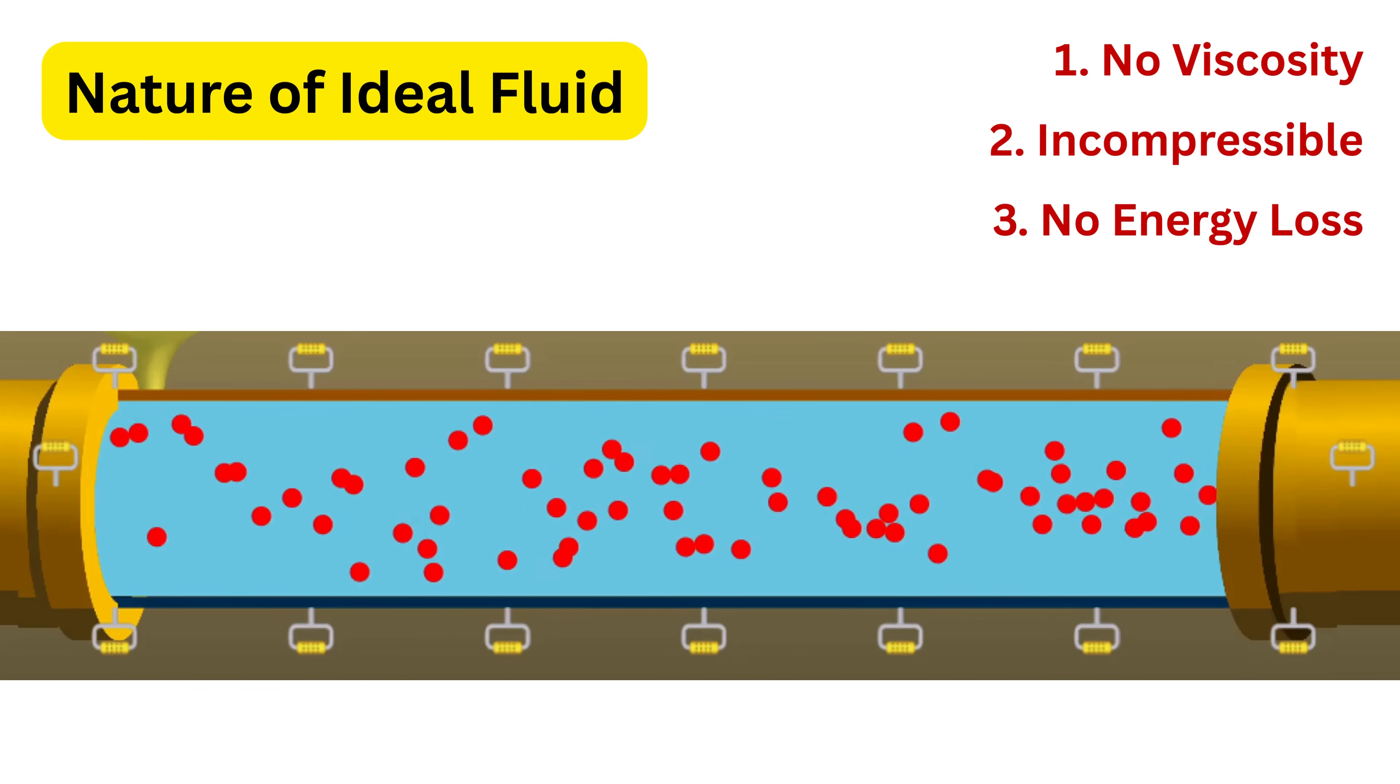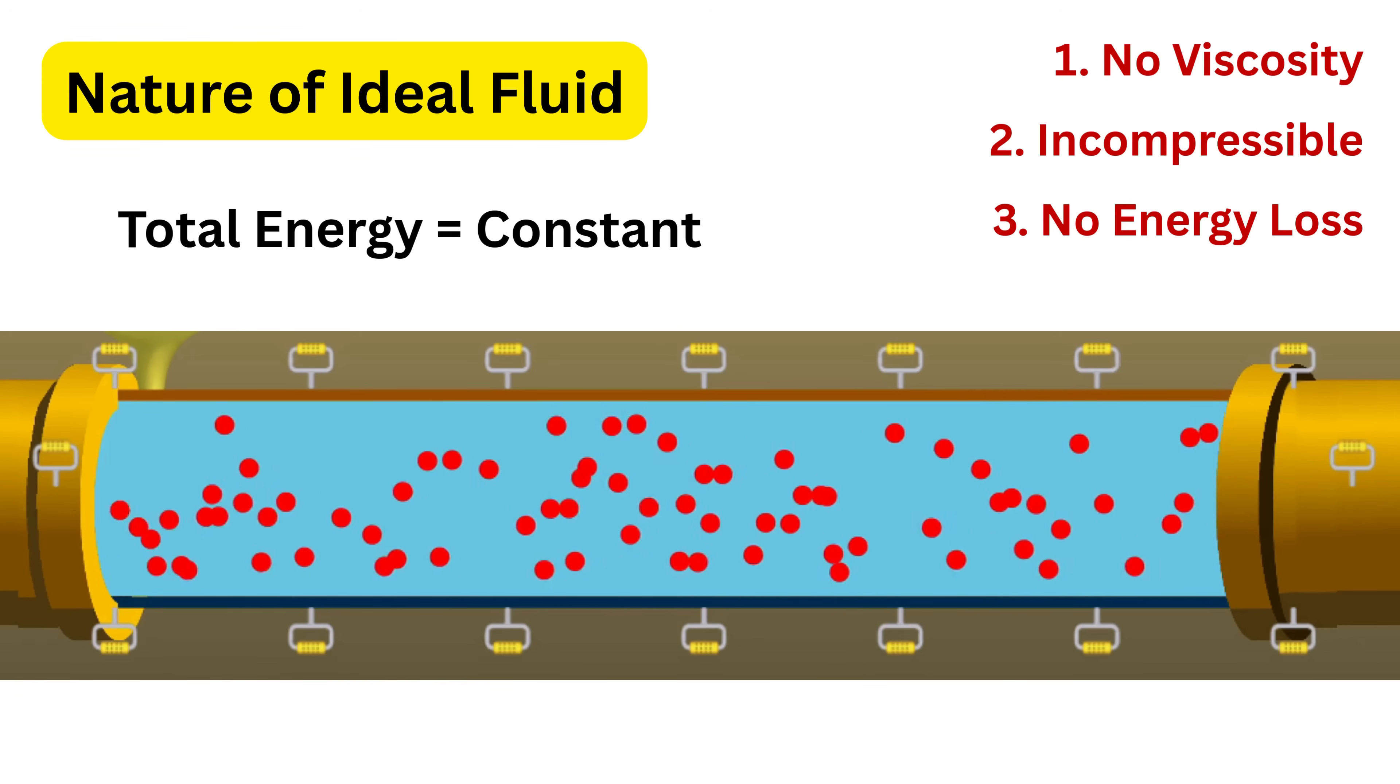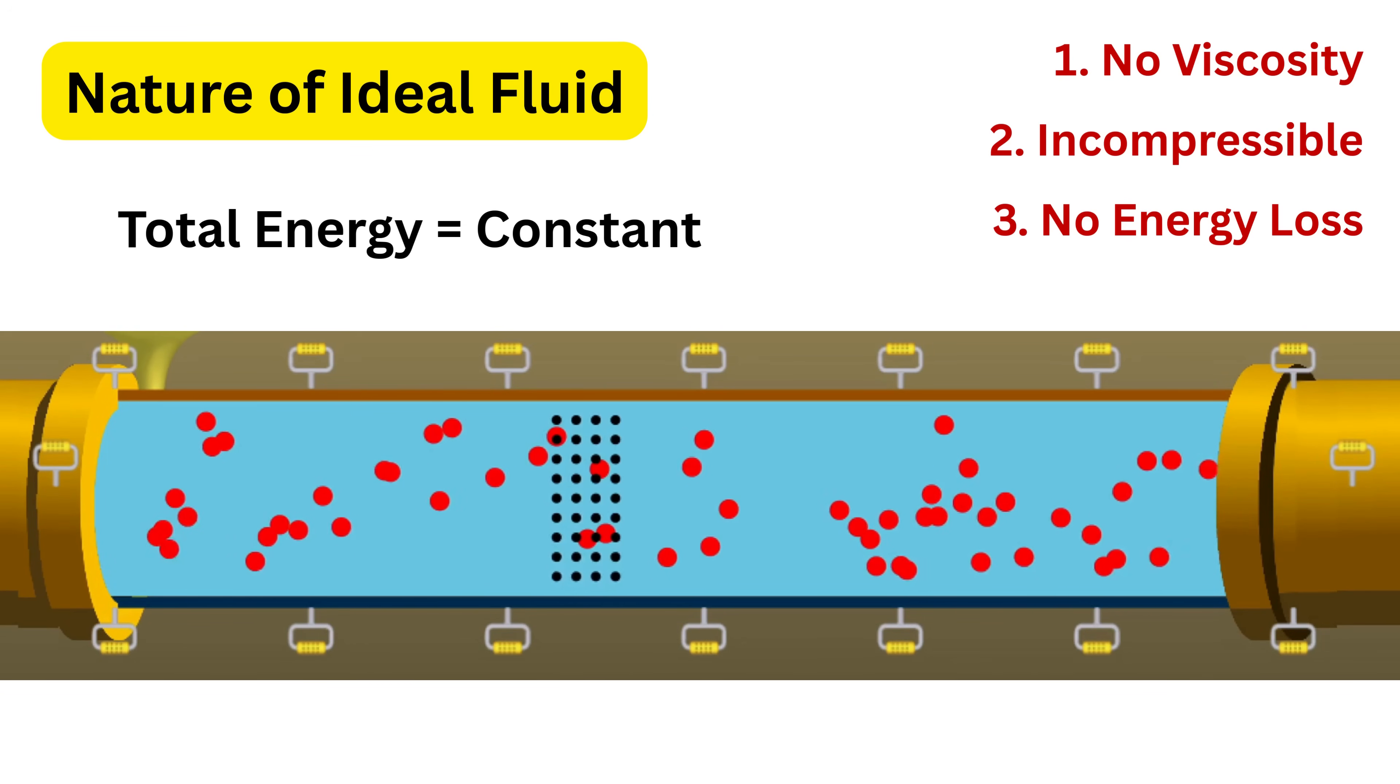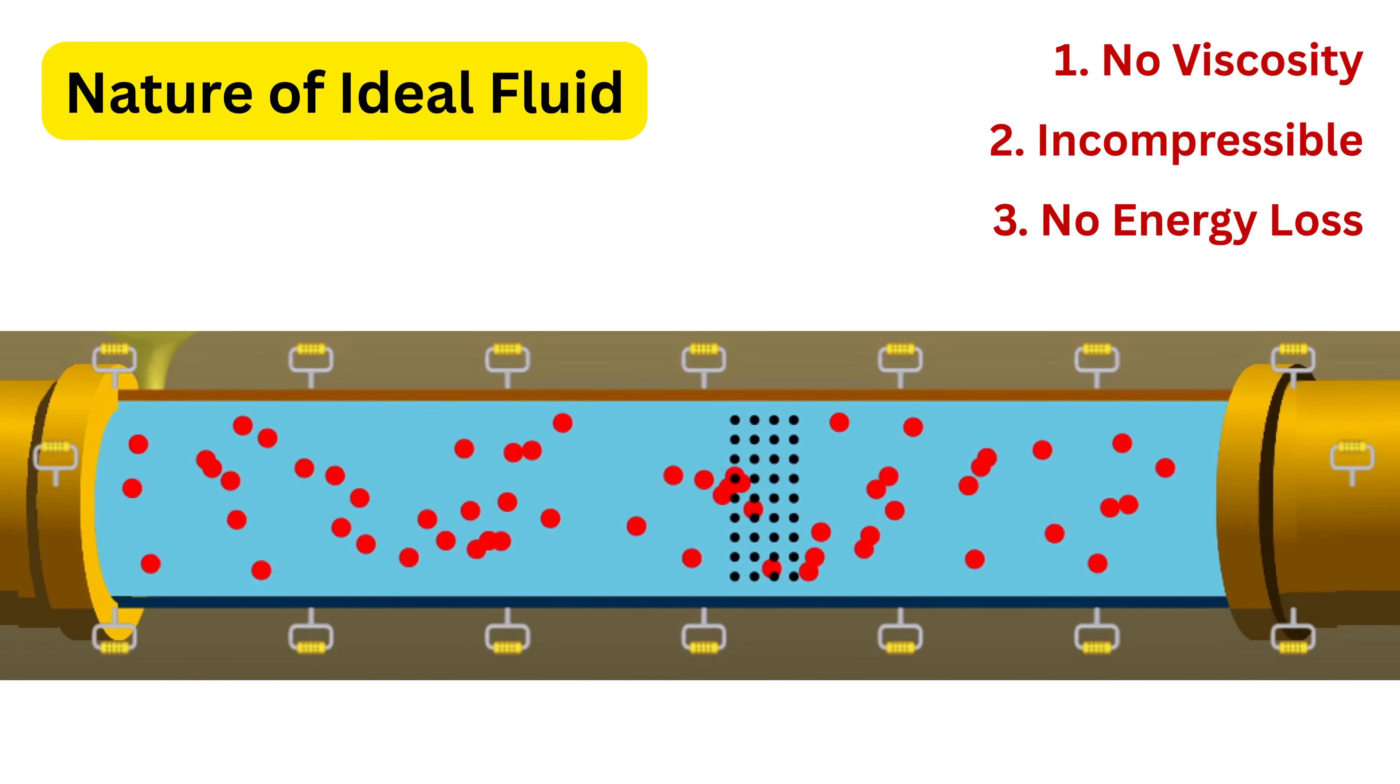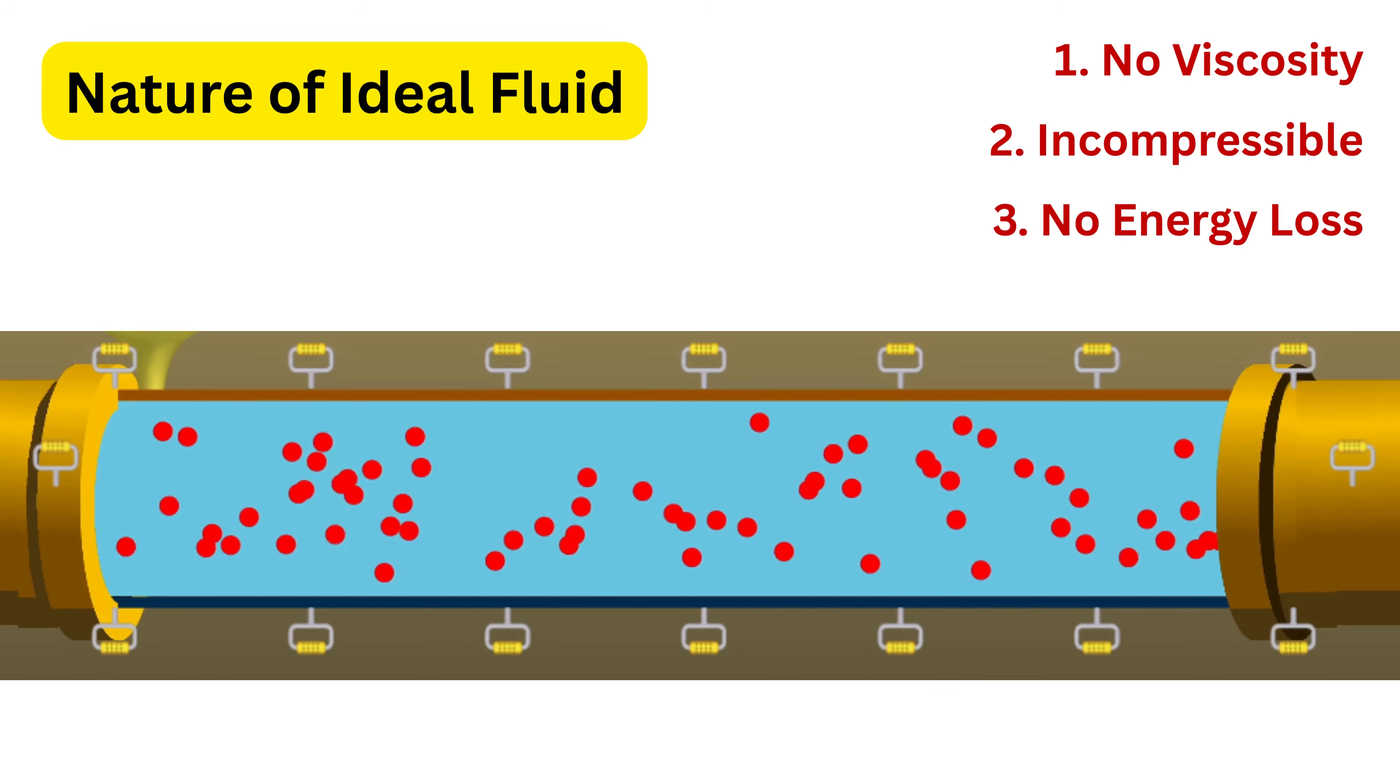Then the last assumption is that there is no energy loss during its motion. This means the total energy the fluid has at one point remains the same as it moves from one place to another. These assumptions may not be 100 percent true for real fluids like water or air, but they help us focus on the fundamental ideas of fluid flow and make the analysis simple, clear, and easy to extend to real situations later.